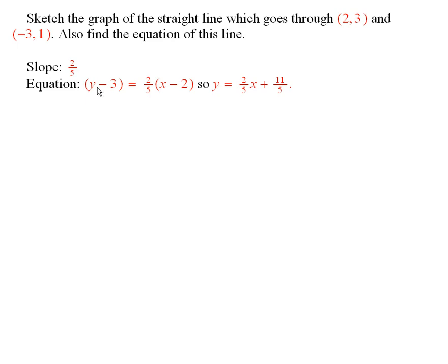Therefore the equation of the line is y minus 3, that's this 3 here, is equal to 2 fifths times x minus 2, that's that 2 there. Now I could have used this point also. I could have said the equation of the line is y minus 1 is equal to 2 fifths times x minus a negative 3, and it would all have worked out the same way.